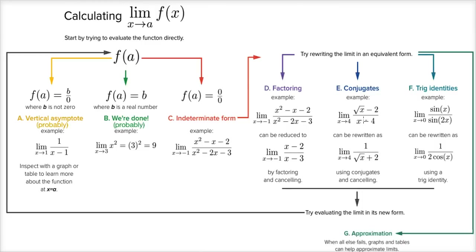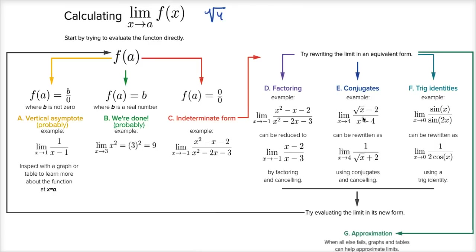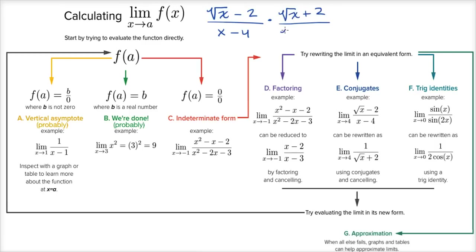For example, in this situation, if you try to evaluate the limit as x approaches four of square root of x minus two over x minus four at x equals four, you get the square root of four minus two over four minus four, which is zero over zero — indeterminate form. The technique here, because we see a radical expression, is to multiply by the conjugate: square root of x plus two over square root of x plus two. Since it's the same expression over itself, we're not fundamentally changing its value.